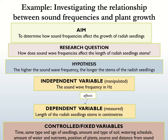The dependent variable is the amount by which radish seedling stems grow, measured in centimeters. The controlled or fixed variables include: time, conditions such as the amount and type of soil, the amount of water and nutrients, the amount of sunlight, position of the plants relative to the sunlight, source of the sound, and so forth. Notice that units of measurement are mentioned for the variables — this is very important.